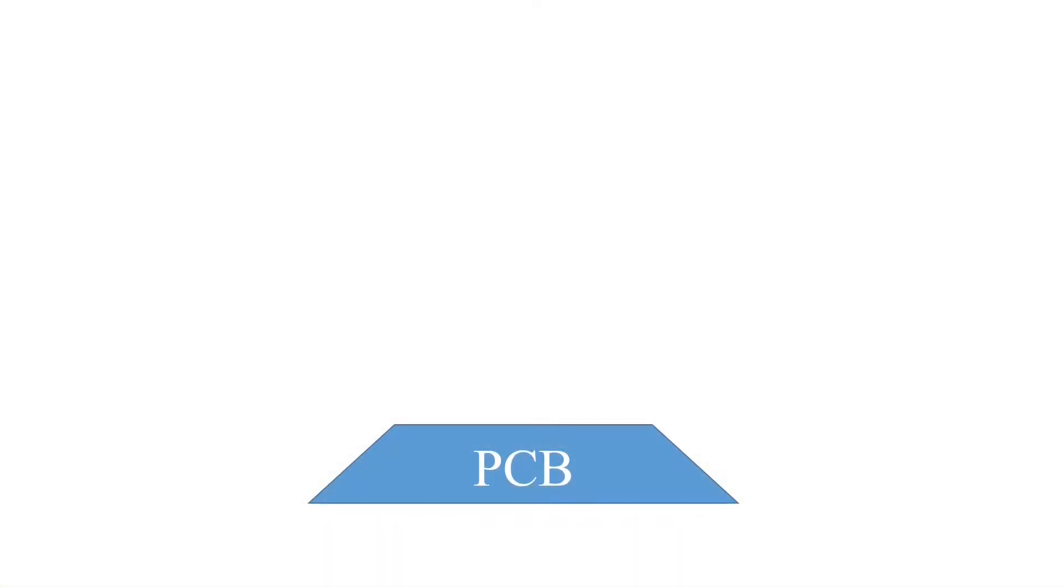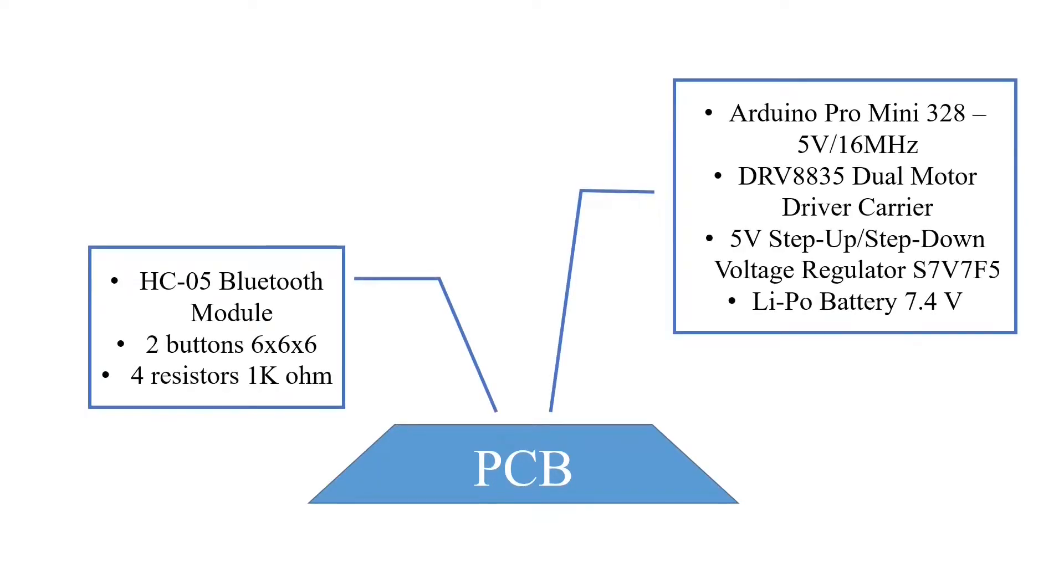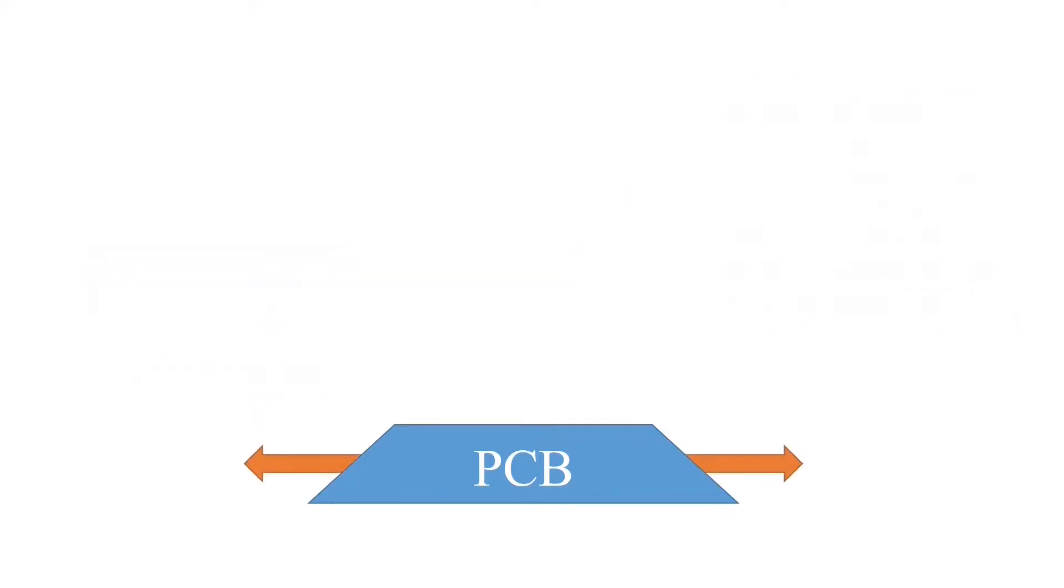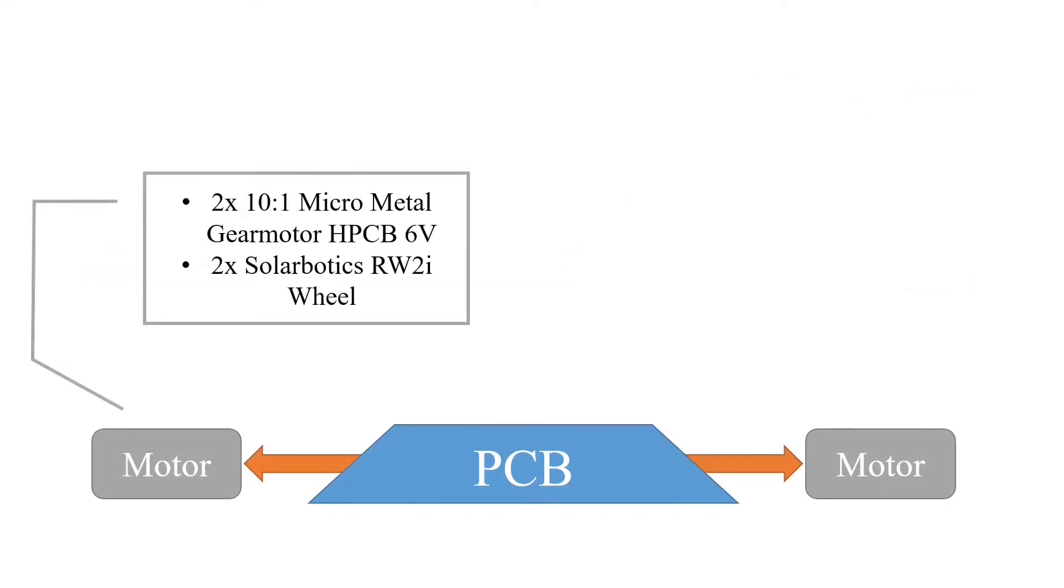You can find on this PCB a microprocessor represented by an Arduino Pro Mini connected to a motor driver and a reflectance sensor array. The motor driver controls the two micrometal gear motors that can rotate up to 3000 rotations per minute.